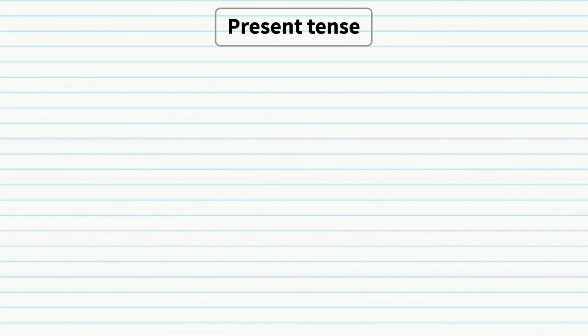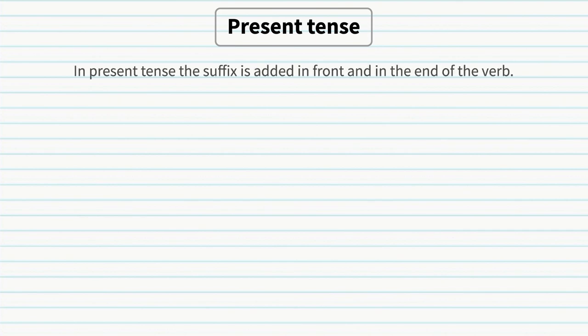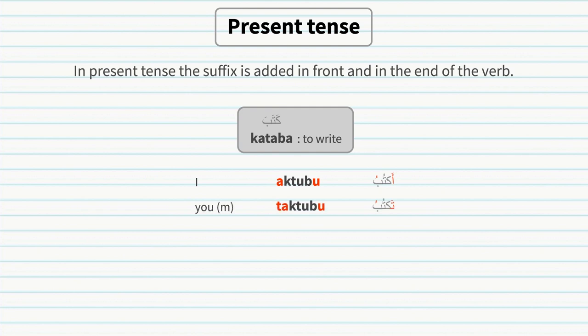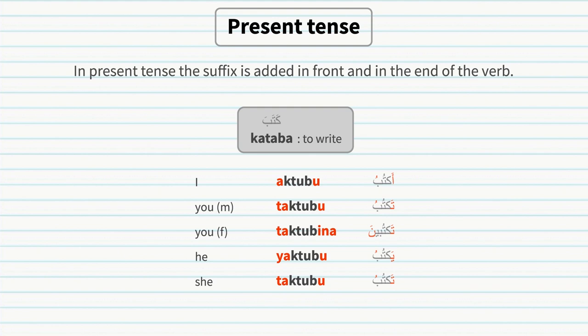In the present tense, a suffix is added at the front and at the end of the verb. Just like the past tense, we will focus on singular conjugation. Notice there are 5 pronouns but only 4 distinct changes, since the 2nd and 5th forms are the same.